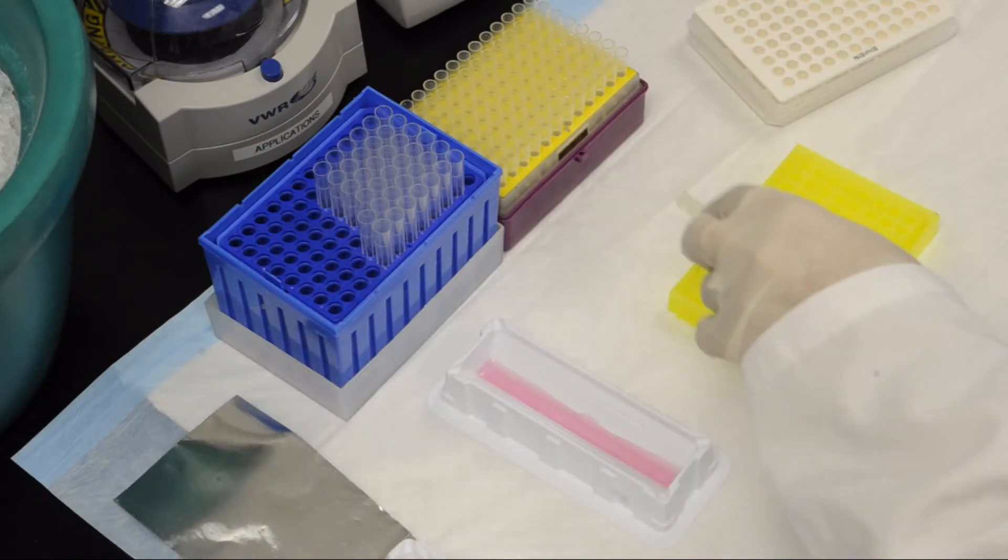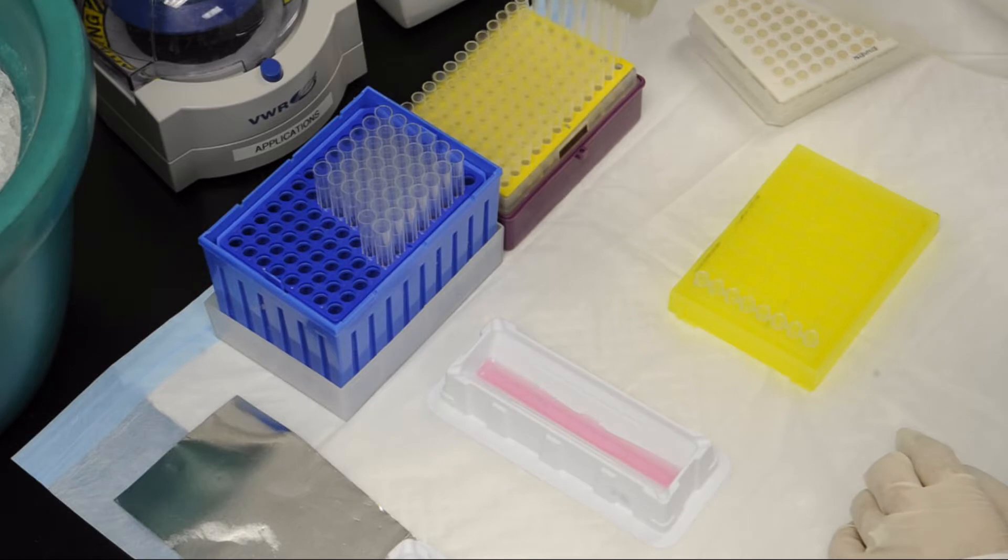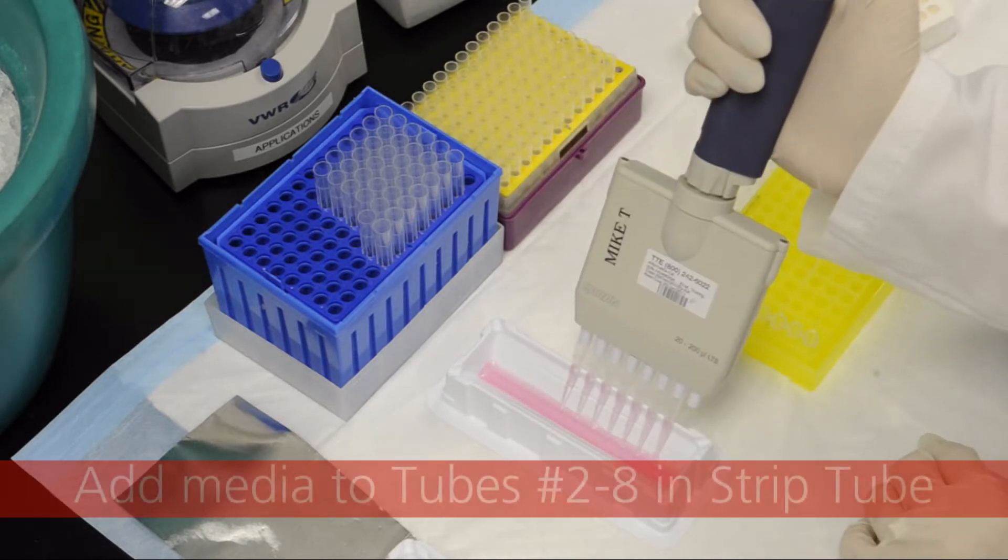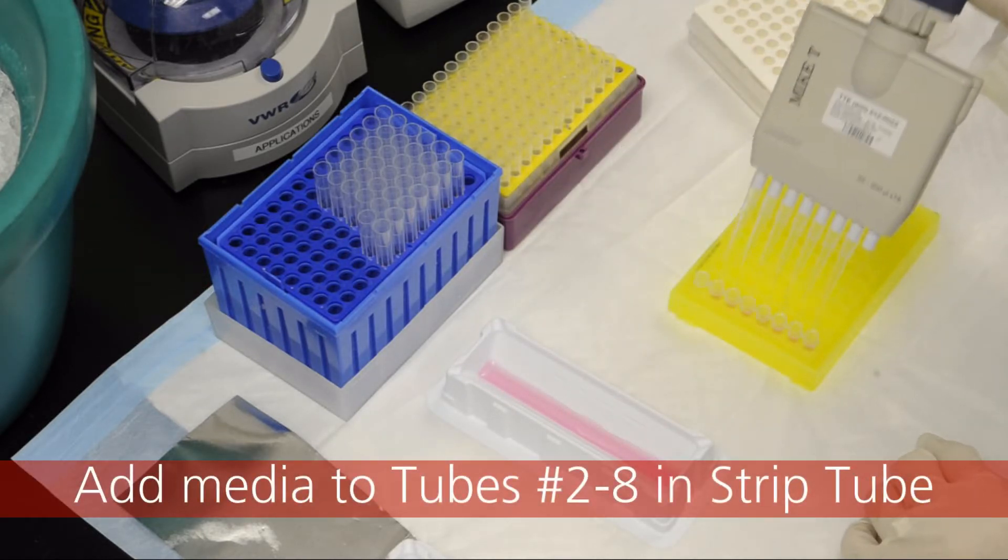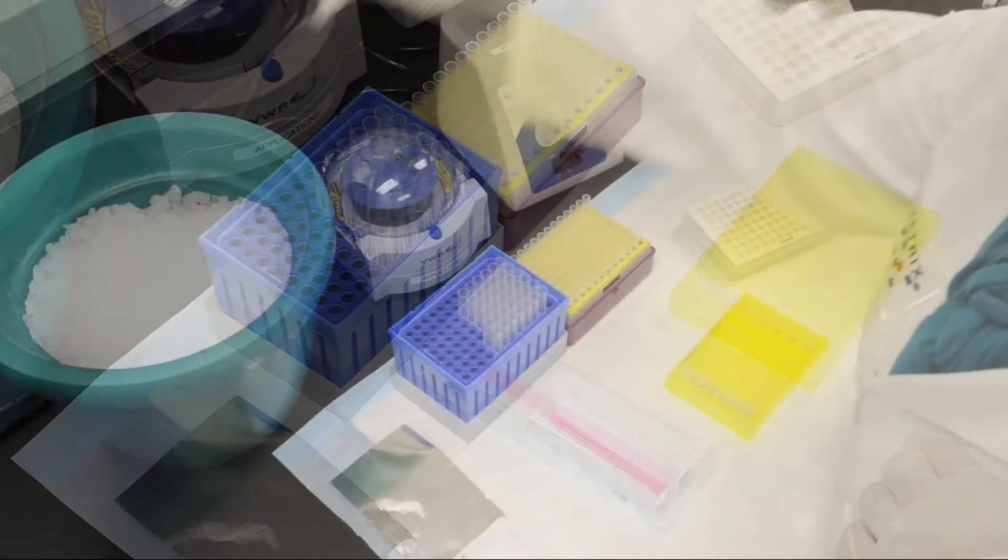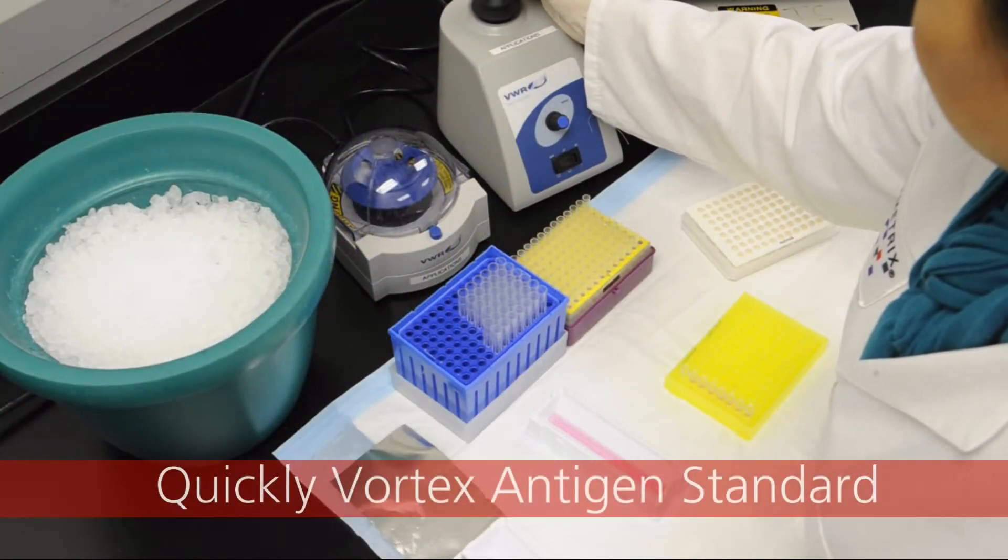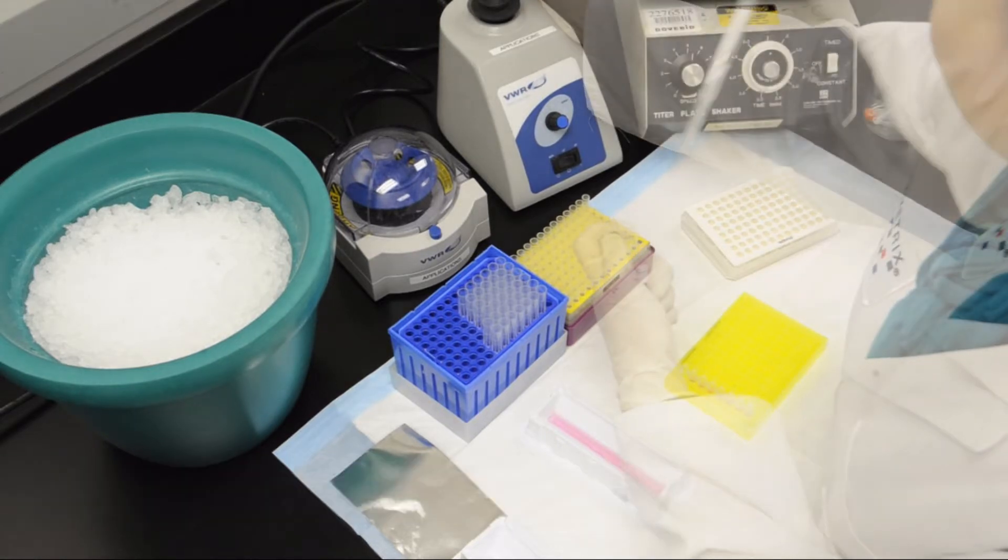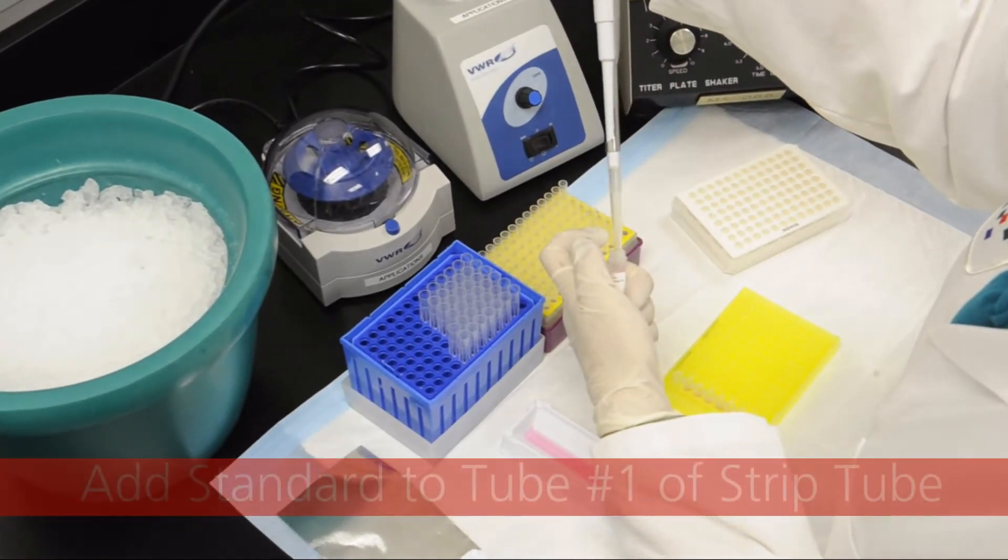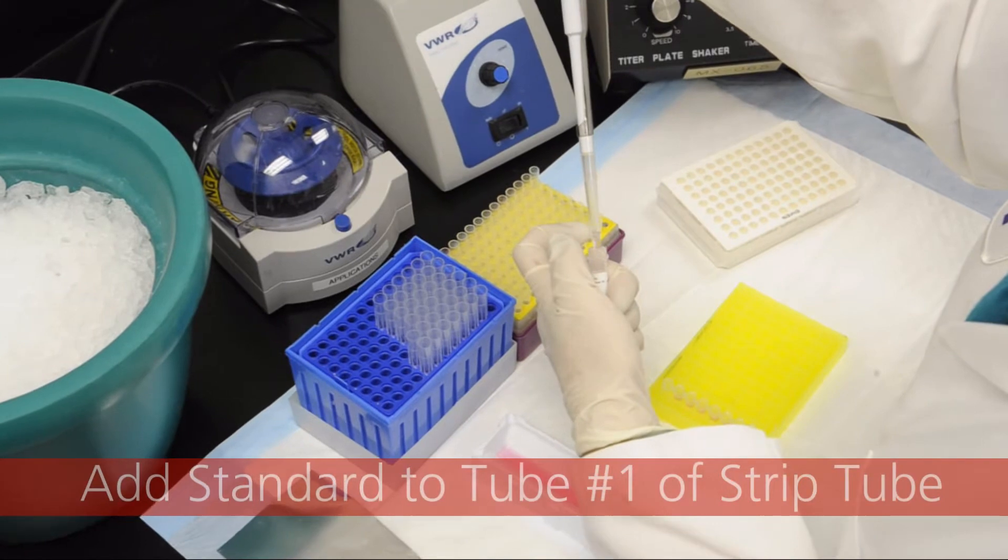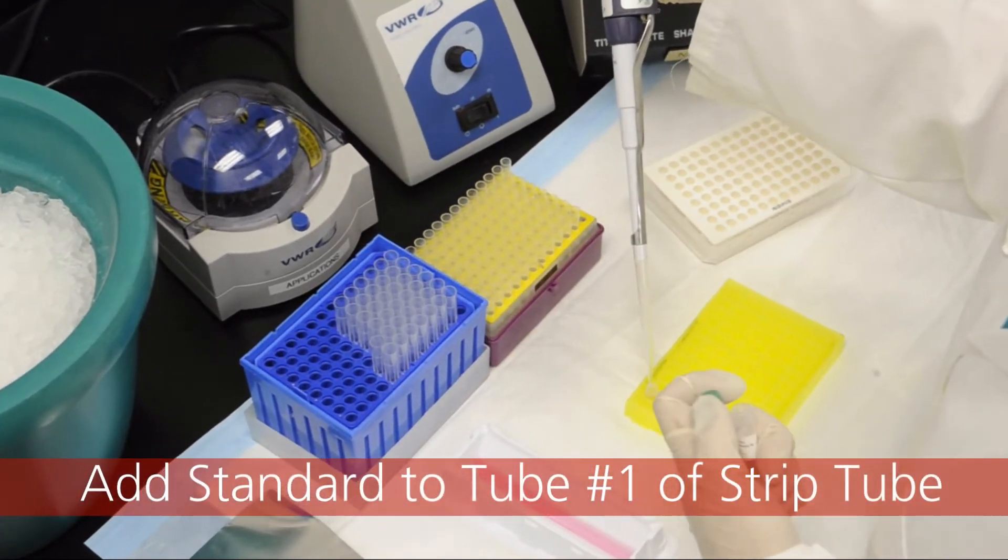Using a reservoir and a multi-channel pipet, add 200 microliters of media to tubes 2 through 8 of the PCR-8 tube strip. Pipet the contents of the antigen standard into tube 1 of the PCR tube strip.